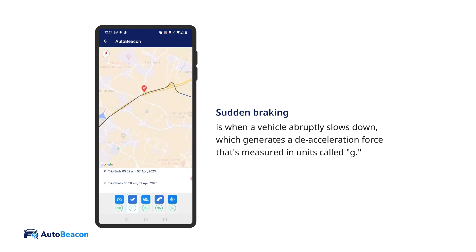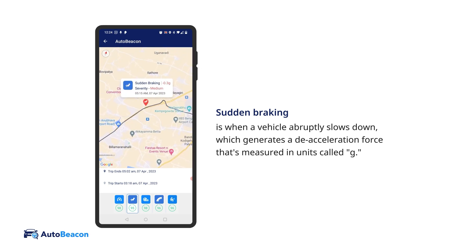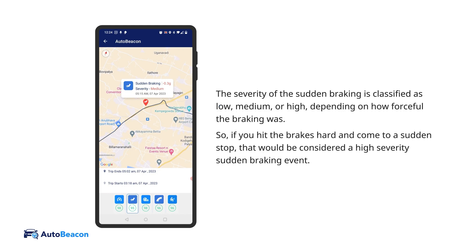Sudden braking is when a vehicle abruptly slows down, which generates a deceleration force measured in units called G. The severity of the sudden braking is classified as low, medium, or high, depending on how forceful the braking was. So if you hit the brakes hard and come to a sudden stop, that would be considered a high-severity sudden braking event.